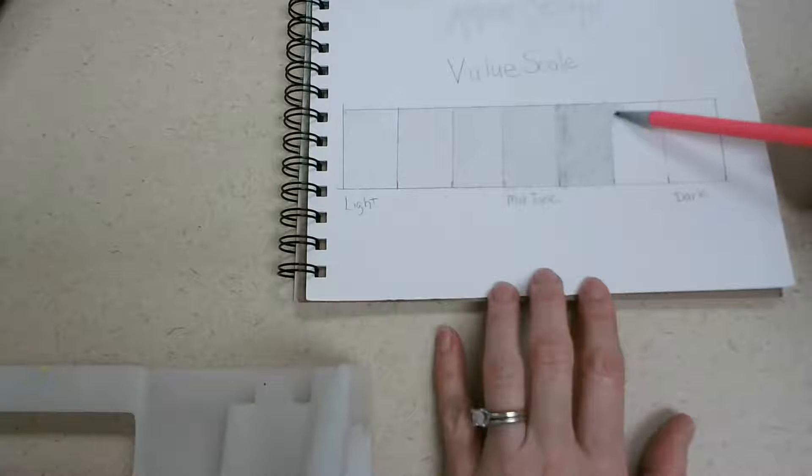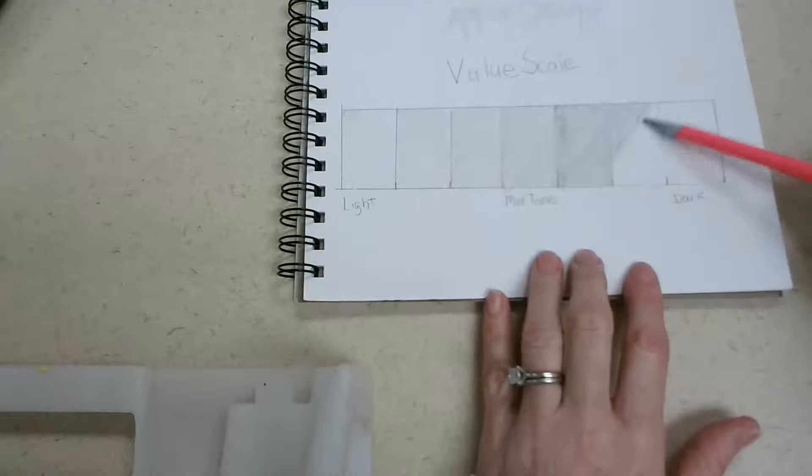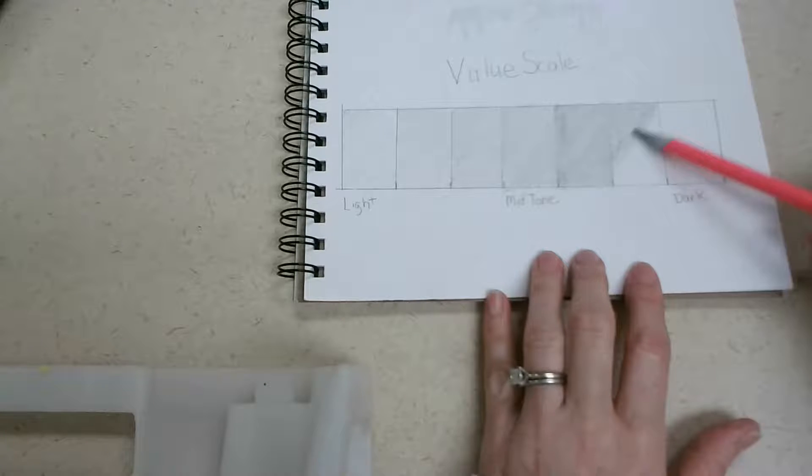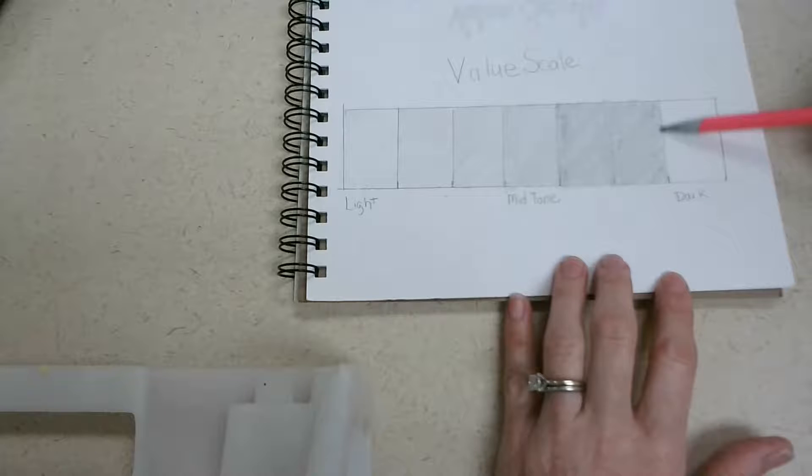All right, so we're getting to our darkers. So now I'm going to start applying more pressure. So I'm still using the side of my pencil. Using the side of the tip actually is a nice way of eliminating lines, instead of using the very tip of your pencil. You use more of the side of your pencil.